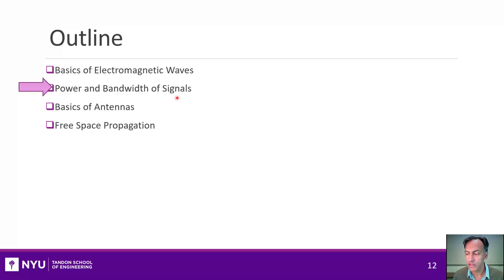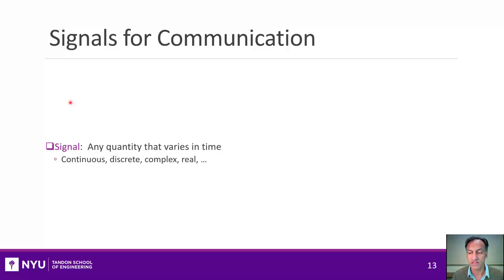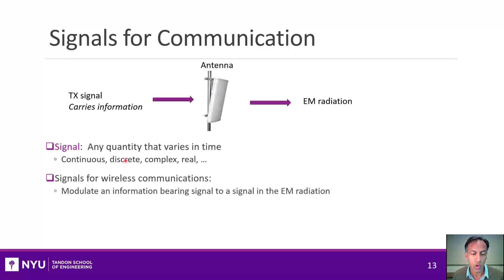In this section, I want to quickly review how to describe mathematically the power and bandwidth of signals, which will let us understand the basics of antennas and propagation. First, let's talk about what signals are. In a signals and systems class, a signal is just any quantity that varies in time — continuous or discrete, complex or real. But for wireless communications, what we're usually interested in are signals that are information-bearing.